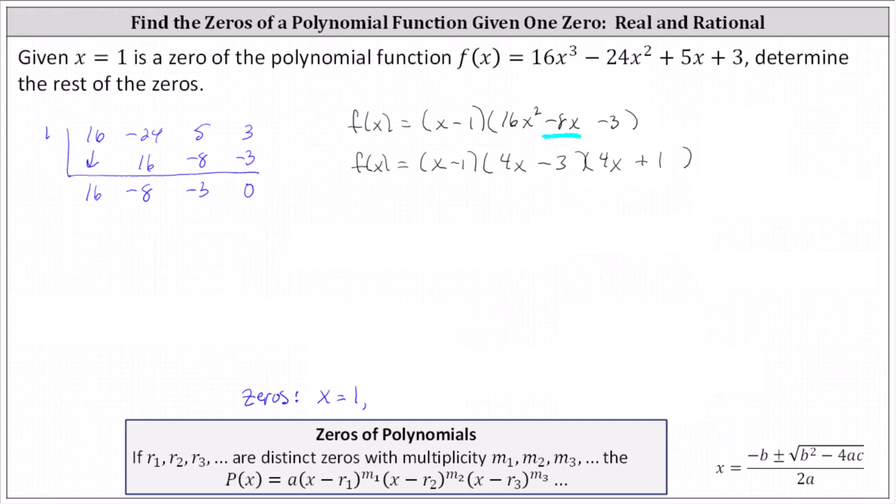And now to find the remaining zeros, you need to set the factors of four x minus three and four x plus one equal to zero and solve for x. For the first equation, we add three to both sides and then divide by four. We have a zero of x equals three fourths.